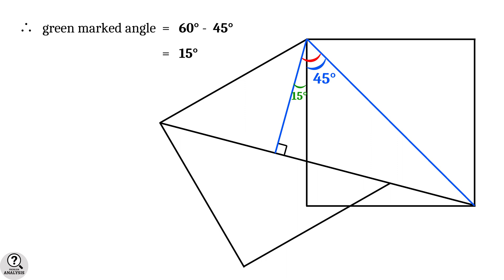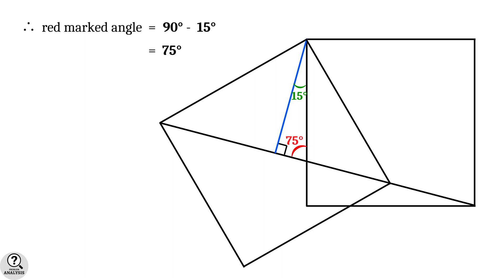Now everything is clear. Consider this smaller right triangle. Then the remaining non-right angle will be 90 degree minus 15 degree equal to 75 degree which is the required angle.